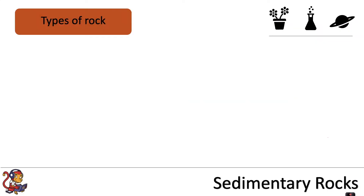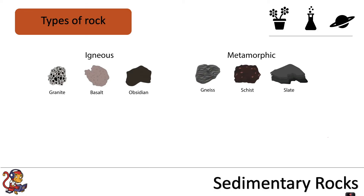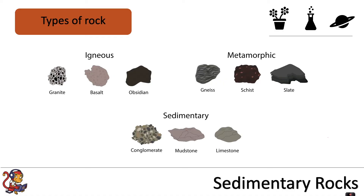There are three different types of rock: igneous rock, metamorphic rock, and sedimentary rock. In this video we're going to concentrate on sedimentary rocks and how they're formed.